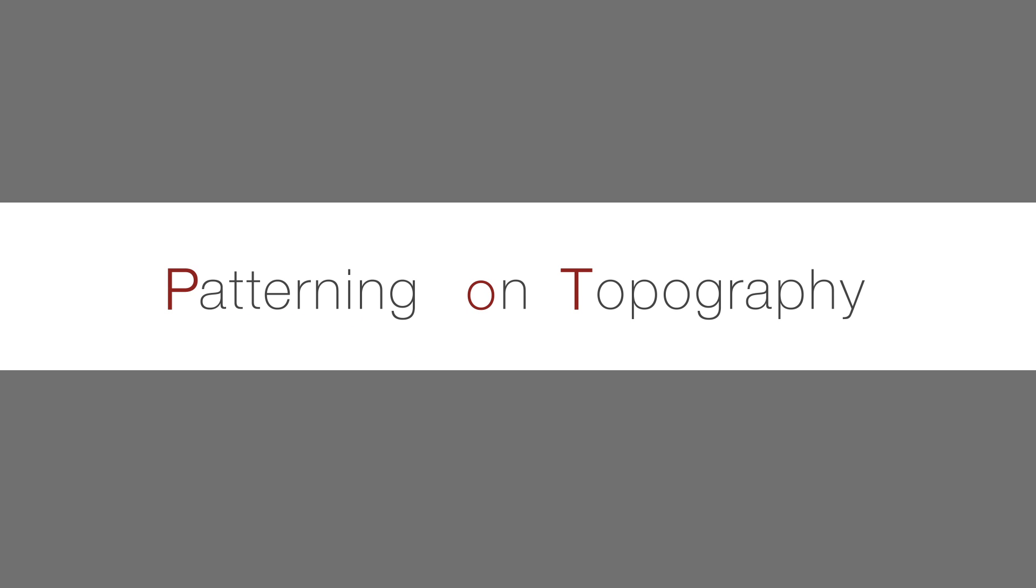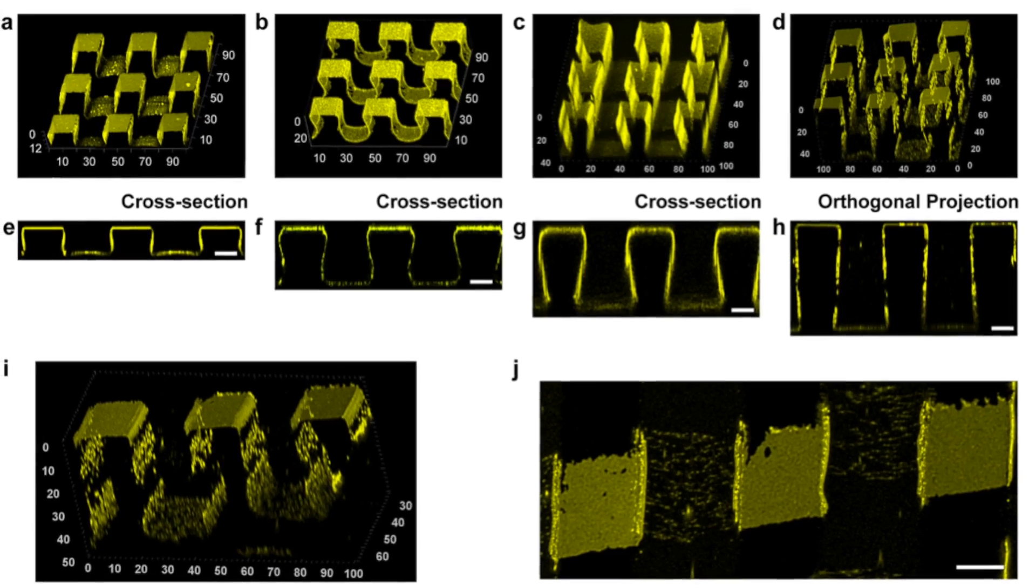We call it POT, or patterning on topography, and it's a way of taking chemistry, different kinds of proteins, and patterning them on surfaces in complex geometries that can control the way cells grow and interface with that surface.